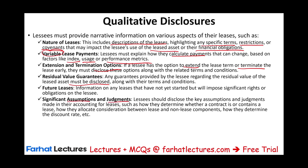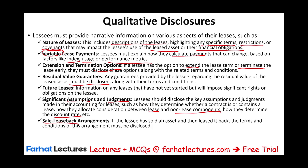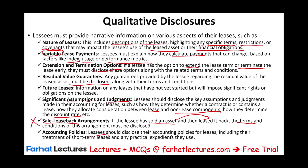Any significant assumptions or judgments made in computing the lease — how did you come up with the asset and the liability on the balance sheet? How did you determine the discount rate if you have lease and non-lease components? Just spell it out for us. If there is a sale-leaseback arrangement — where the lessee has sold the asset and then leased it back as a form of financing — disclose the terms and conditions. Note that for the CPA exam, you don't have to worry about sale-leaseback under FASB. Also, lessees should disclose their accounting policies, including their treatment of short-term leases.